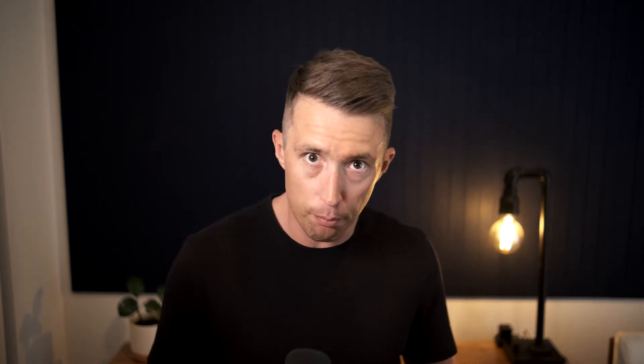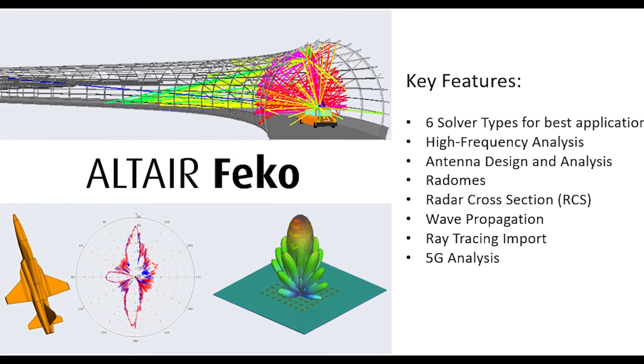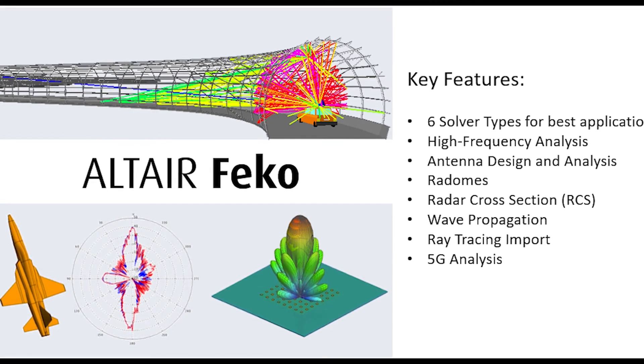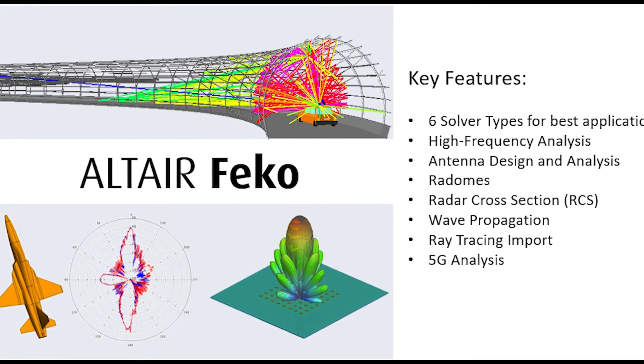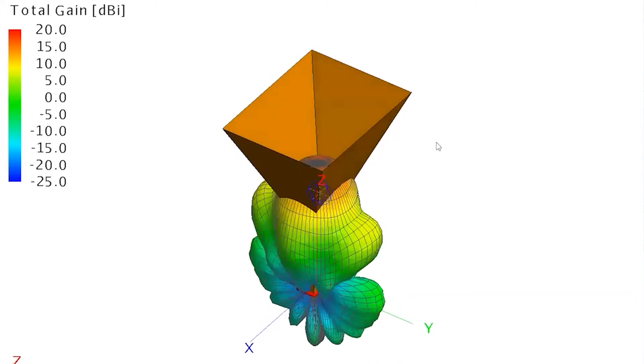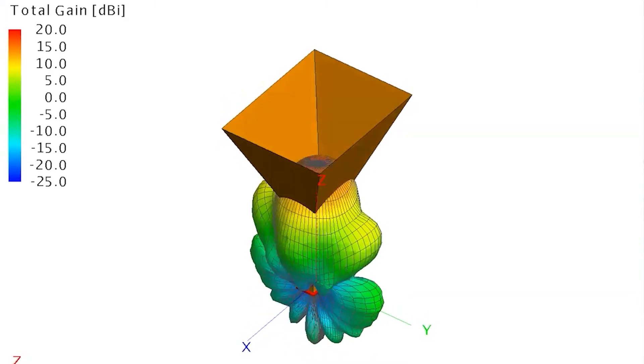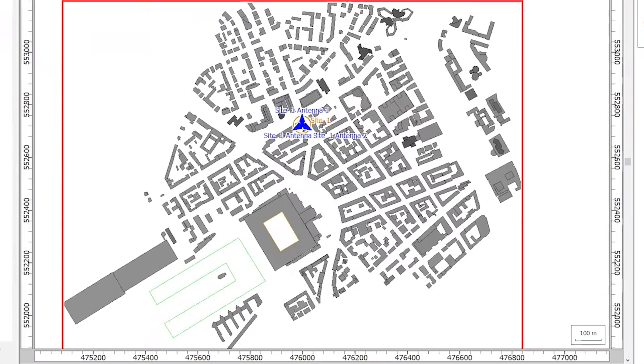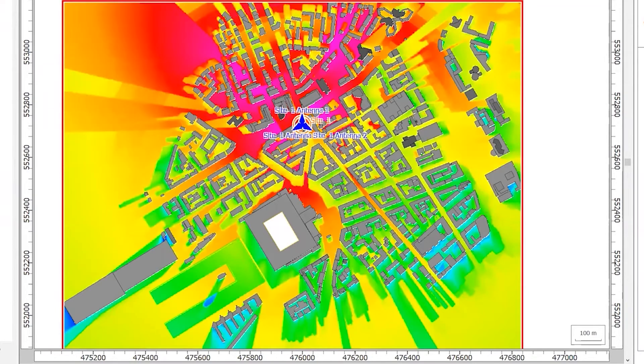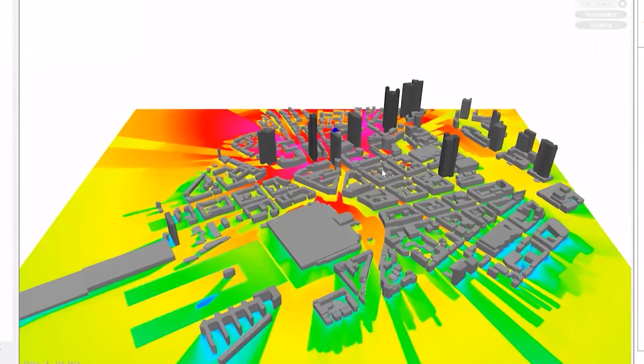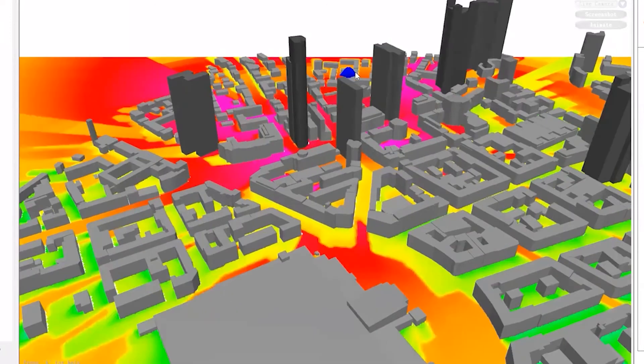Altair FEKO is a widely used simulation tool for users who need to understand high-frequency applications like electromagnetic compatibility, antenna design and placement, 5G applications, scattering analysis, and radar cross sections. FEKO also includes a wave propagation tool called WinProp which allows users to understand specialized applications for radio network planning across multiple environments.